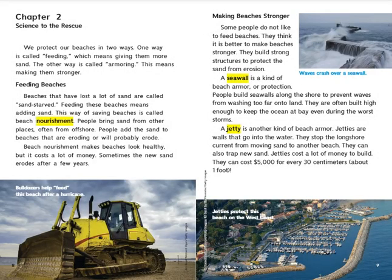Chapter 2: Science to the Rescue. We protect our beaches in two ways. One way is called feeding, which means giving them more sand. The other way is called armoring, which means making them stronger. Feeding beaches: Beaches that have lost a lot of sand are called sand-starved. Feeding these beaches means adding sand, a process called beach nourishment. People bring sand from other places, often from offshore, and add it to beaches that are eroding or will probably erode. Beach nourishment makes beaches look healthy, but it costs a lot of money. Sometimes the new sand erodes after a few years.